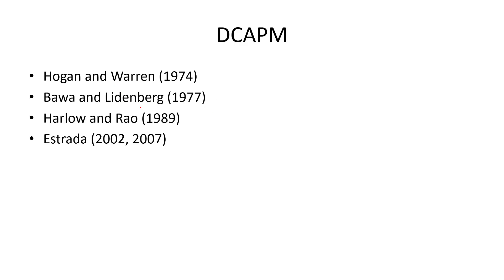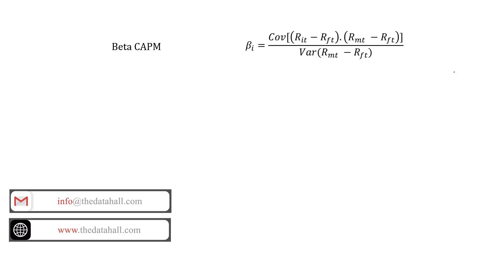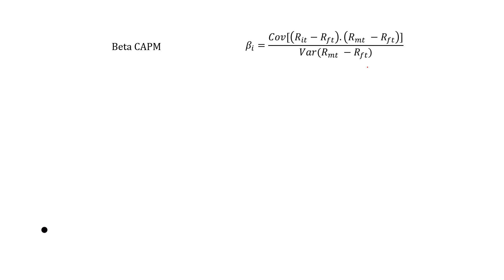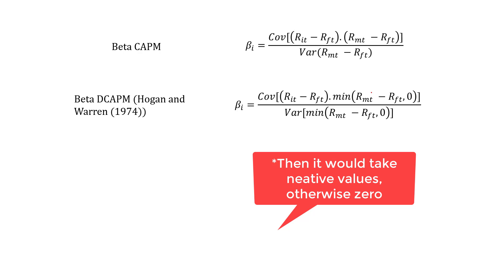For that, we have certain models. Hogan and Warren, and Bauer and Lindenburg — these two are similar models. Then we have Harlow and Rao, and Estrada. Now, the D-CAPM beta of Hogan and Warren takes only the downside variation. Their equation reads: if R_M minus R_F is negative, take zero; otherwise take the difference between R_M and R_F. So instead of variance, they use semi-variance, and instead of covariance, they use semi-covariance — maintaining the risk-free benchmark but only taking downside market return.